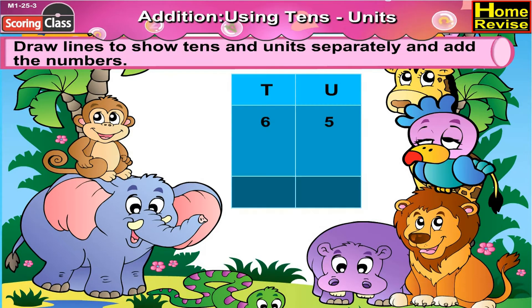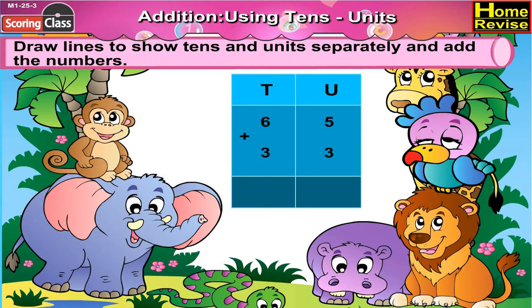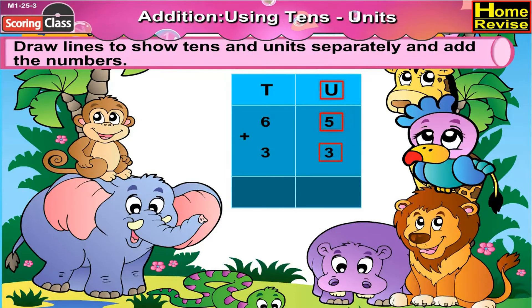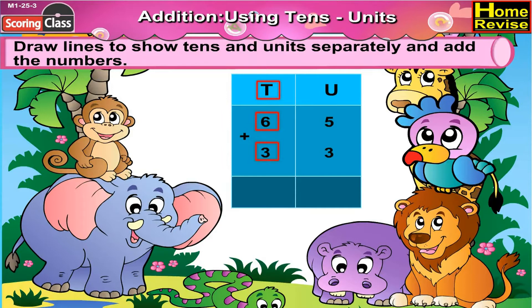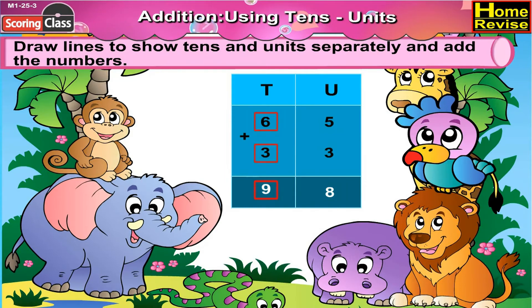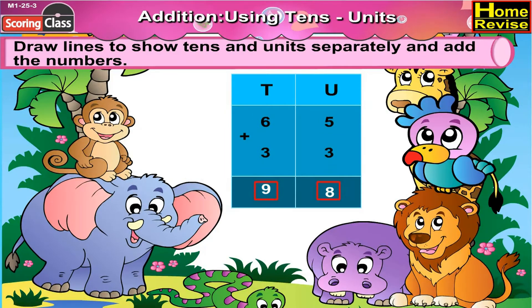Next is 65 plus 33. Let us draw a line between 65 and 33. Write units above 5 and 3 and tenths above 6 and 3. 5 plus 3 is 8, 6 plus 3 is 9. So 65 plus 33 is 98.